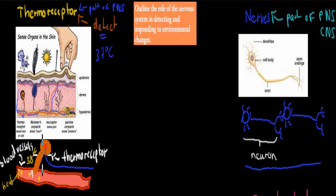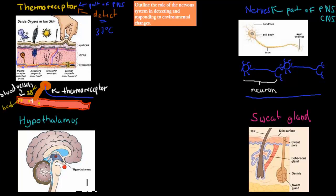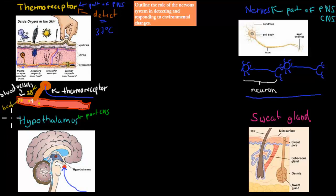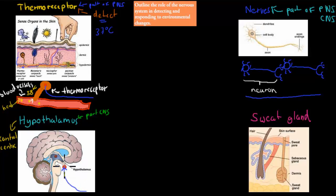So if the thermoreceptor picks up that change, it will send a signal, and that signal will arrive at the hypothalamus. The hypothalamus is part of the central nervous system because it is part of the brain. It is the coordinating or control center — it helps decide what to do. So the thermoreceptor's only job is to pick up the change and send a signal to the hypothalamus, which is part of our brain, and then that part of the brain decides what to do with that signal.